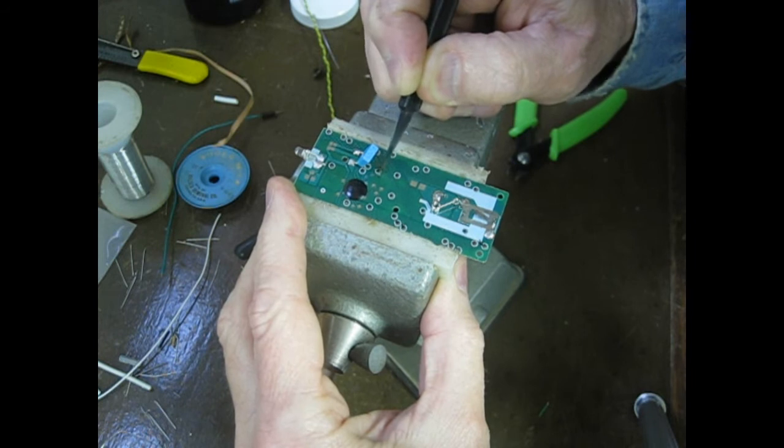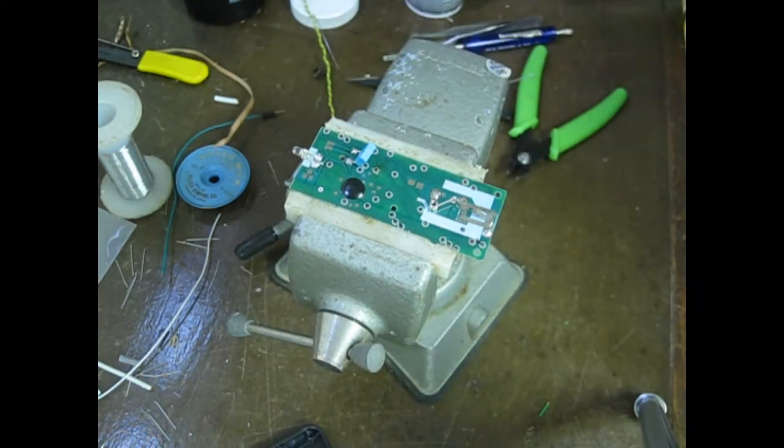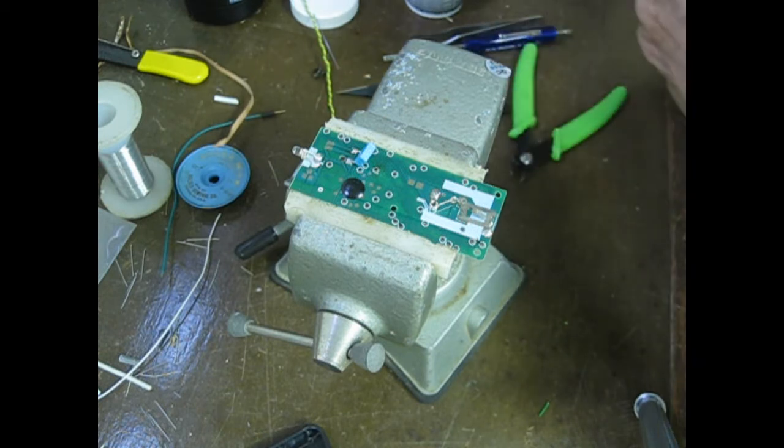Next, we heat the pre-tinned wire against the soldered through hole, making the connection for both of the wires.